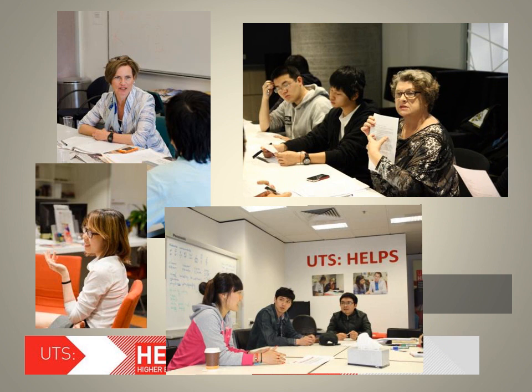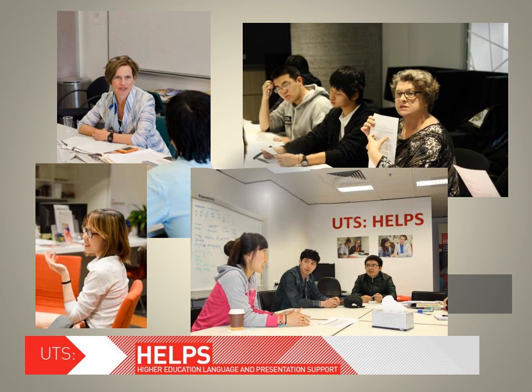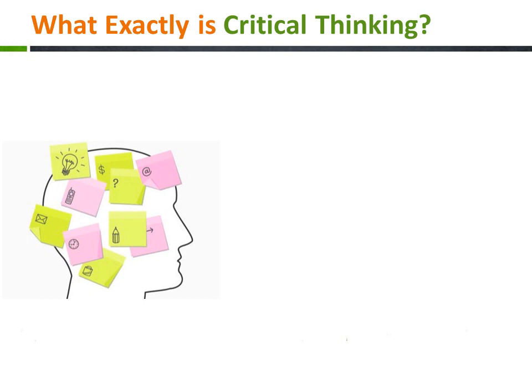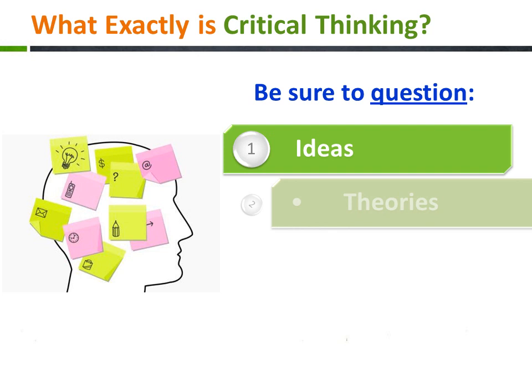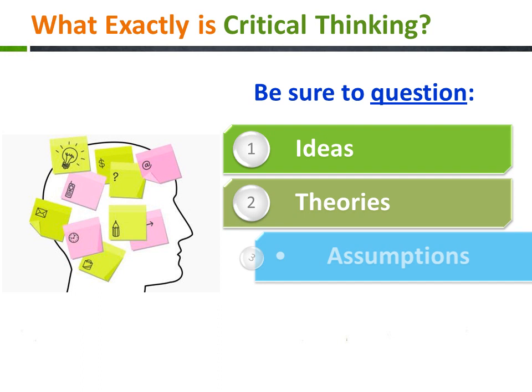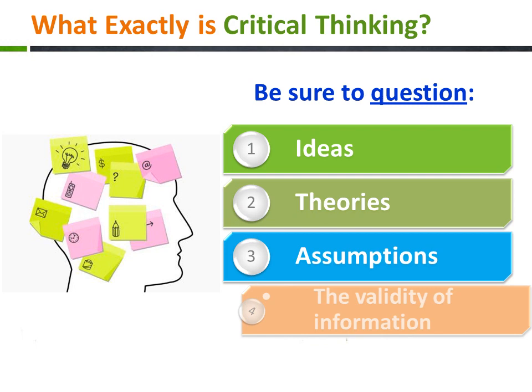University students are expected to adopt this critical approach. Critical thinking is a skill which can be challenging for students to do, because it involves questioning — questioning ideas, theories, assumptions or the validity of information. However, it is this healthy scepticism that is encouraged in an academic context. Through critical thinking, the student can demonstrate that they have given full consideration about the topic. This is what lecturers want and expect from their students.